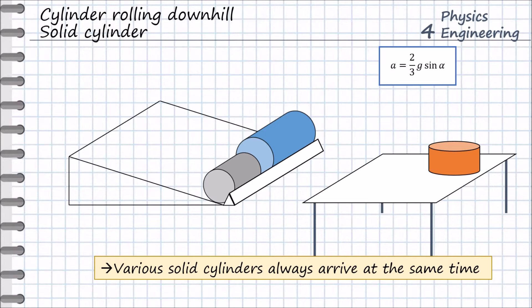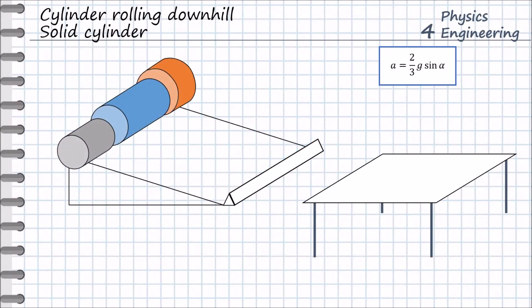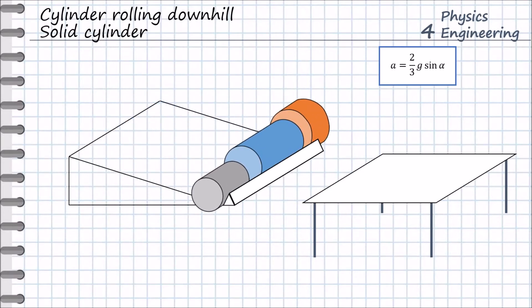Let us now include one more cylinder, which has a bigger radius and different mass. If we release all three cylinders at the same time, they will roll together with the same speed and arrive at the same time as well.